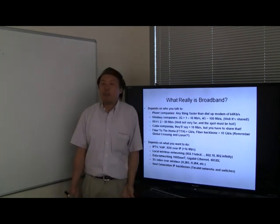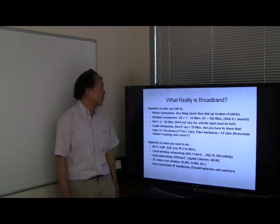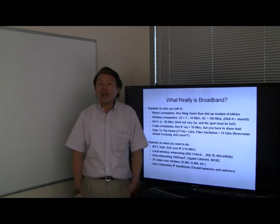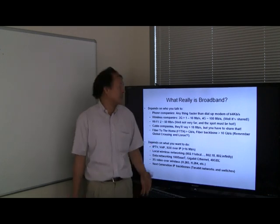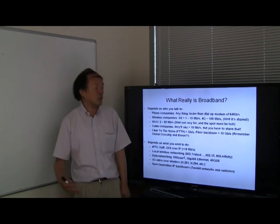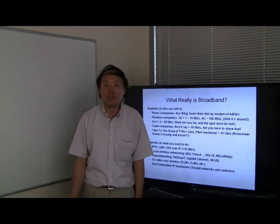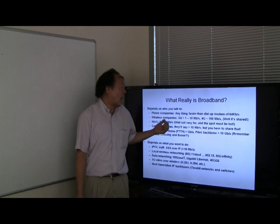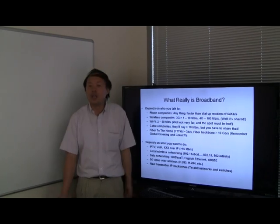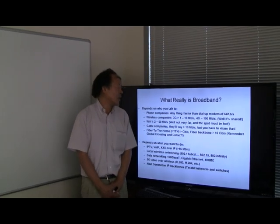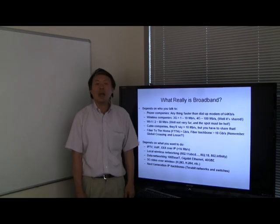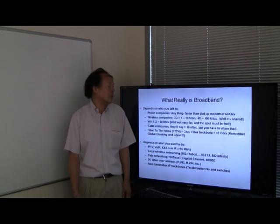What really is broadband depends on who you want to talk to. For the phone company, 10 or 20 years ago, anything faster than a dial-up modem speed of 64 kilobits per second was considered broadband. Whereas for wireless companies these days in 3G, a cellular phone network is something between 1 to 10 megabits per second. For a 4G wireless network, you're talking about 100 megabits per second.